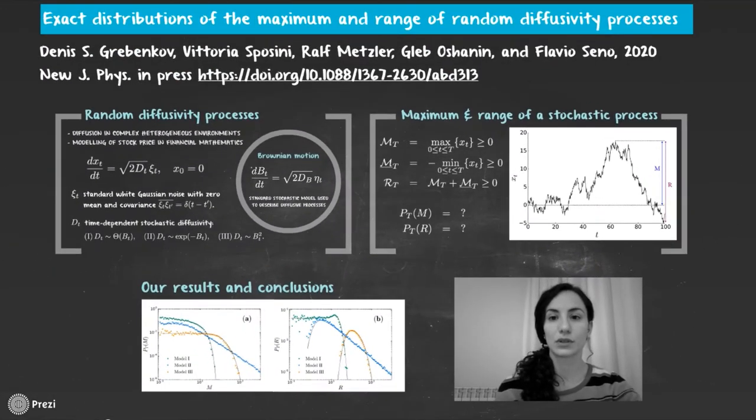Hello everyone, I am Vittoria Sposini from the University of Potsdam. Welcome to my video abstract for our paper on exact distributions of the maximum and range of random diffusivity processes. Our paper has recently been accepted in New Journal of Physics.